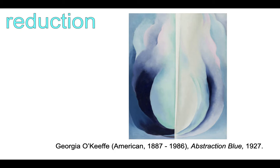Number one is reduction. In this painting by the American artist Georgia O'Keeffe, you can see that she was working with a flower, yet the painting she made does not appear as realistic as a photograph of the subject might be. The texture of the petals have become smooth. The details are reduced in this version of the flower.